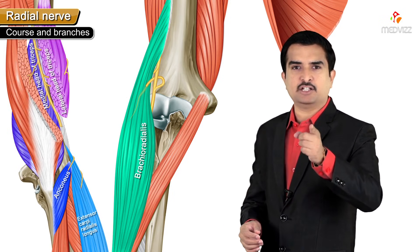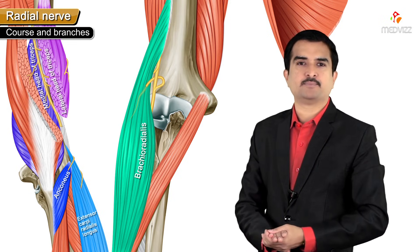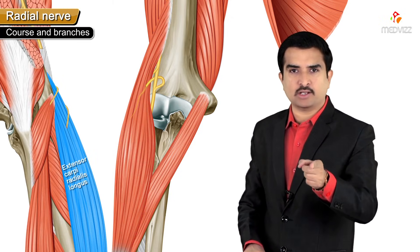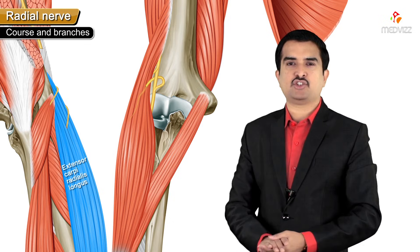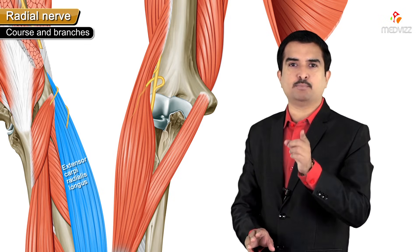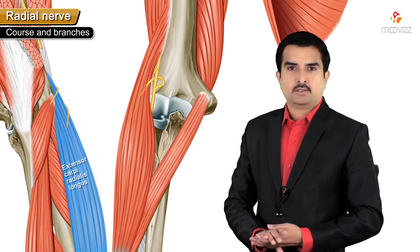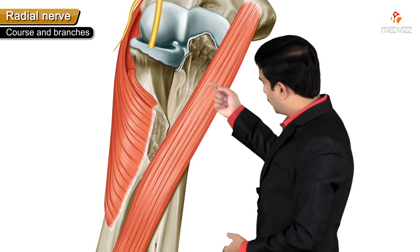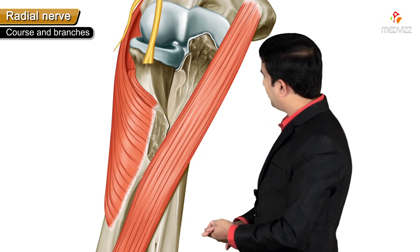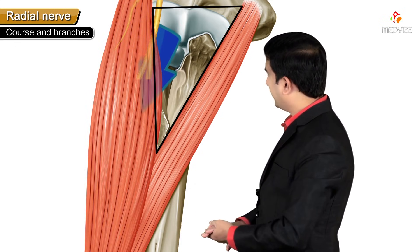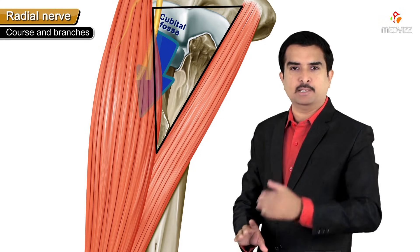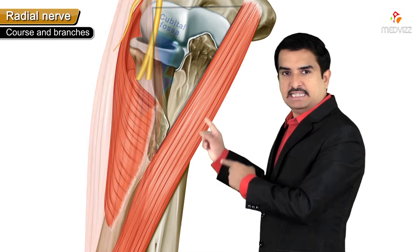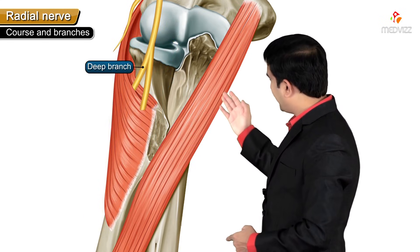An important point: extensor carpi radialis longus is supplied by the direct branch of the radial nerve, not the posterior interosseous nerve. From the anterior aspect of the lateral epicondyle, the nerve enters the cubital fossa. At the level of the elbow, in the cubital fossa, the nerve divides into a deep branch and a superficial branch.